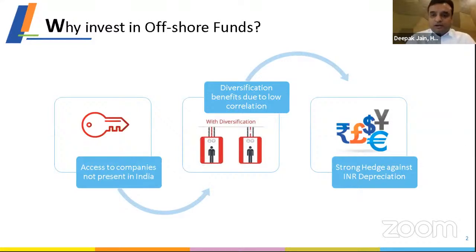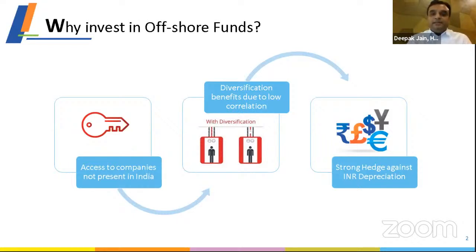Why invest in offshore funds at all when there are so many opportunities in India? This is what we call home bias — people who stay in a particular locality want to stay there, invest there. This comes from familiarity with the terrain, news flow, and the idea of that particular geography. This home bias is prevalent globally, but in India it is strongest, where less than one percent of equity investment goes globally.